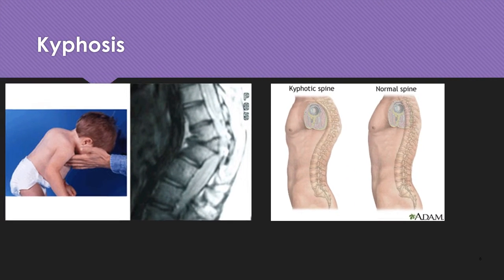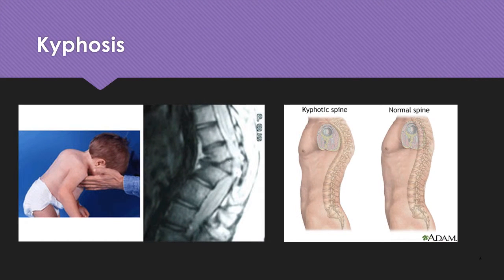Kyphosis is an abnormally increased convex angulation in the curvature of the thoracic spine. The most common form is postural. It can result from tuberculosis, arthritis, osteodystrophy, or compression fracture.